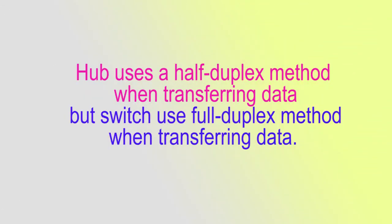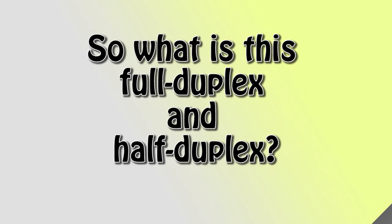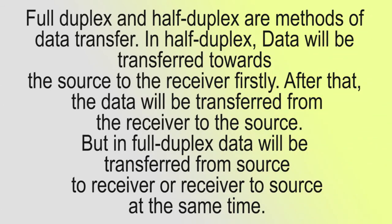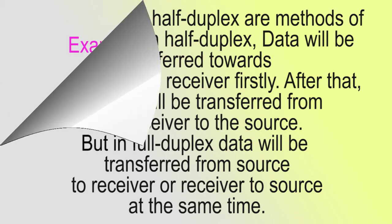A hub uses a half duplex method when transferring data, but a switch uses a full duplex method. So what is full duplex and half duplex? Full duplex and half duplex are methods of data transfer. In half duplex, data is transferred from the source to the receiver first, and then from the receiver back to the source. In full duplex, data is transferred from source to receiver and receiver to source at the same time.